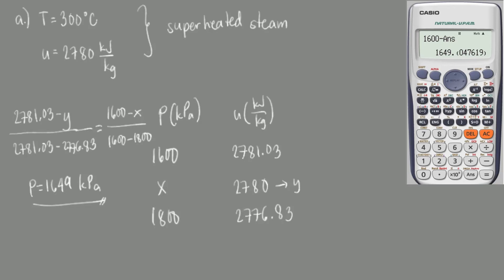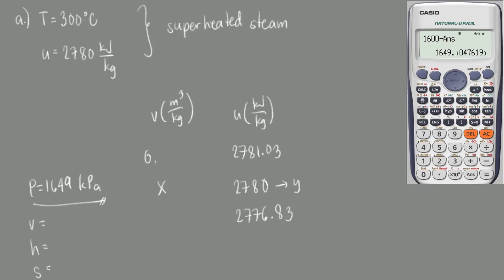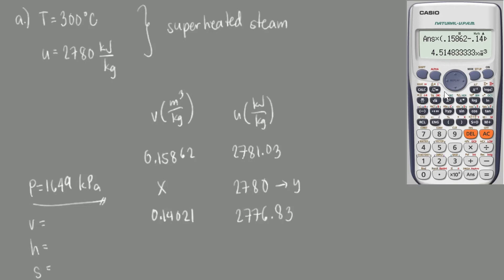Now let's do that for specific volume, specific enthalpy, and specific entropy. For specific volume, the upper value is 0.15862 and the lower value is 0.14021 cubic meters per kilogram. Performing the interpolation, we recall our ratio of 0.245, multiply by the difference (0.15862 minus 0.14021), and subtract this from the upper value of 0.15862. Our specific volume is 0.1541 cubic meters per kilogram. Checking our answer: it is between the upper and lower values and closer to the upper value, as expected.